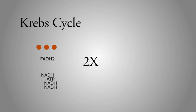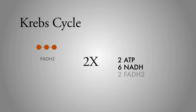The grand total for the Krebs cycle comes to 2 ATP, 6 NADH molecules, and 2 FADH2 molecules.